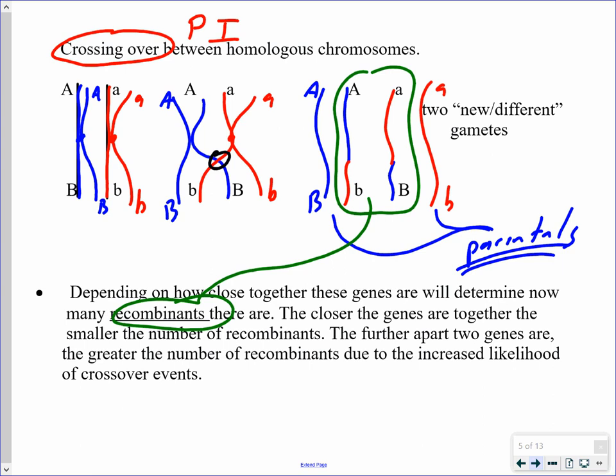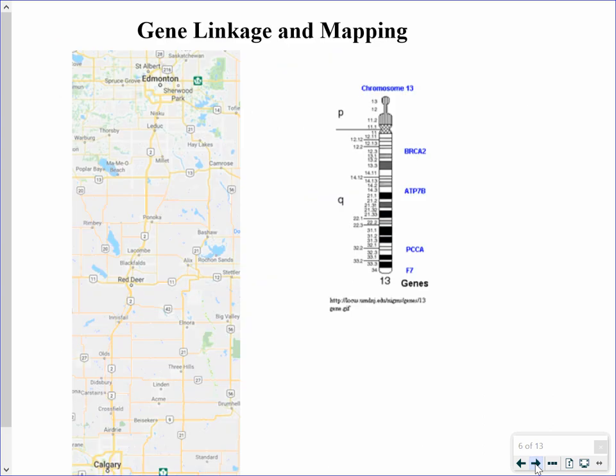The closer two genes are together on the same chromosome, the less likely there will be a crossover event, so the smaller the number of recombinants observed. With Thomas Hunt Morgan's result of 9 out of 300, that's not a very large number of recombinants, so we would say that the A and B genes — for body color and wing shape — were probably relatively close together on the same chromosome.